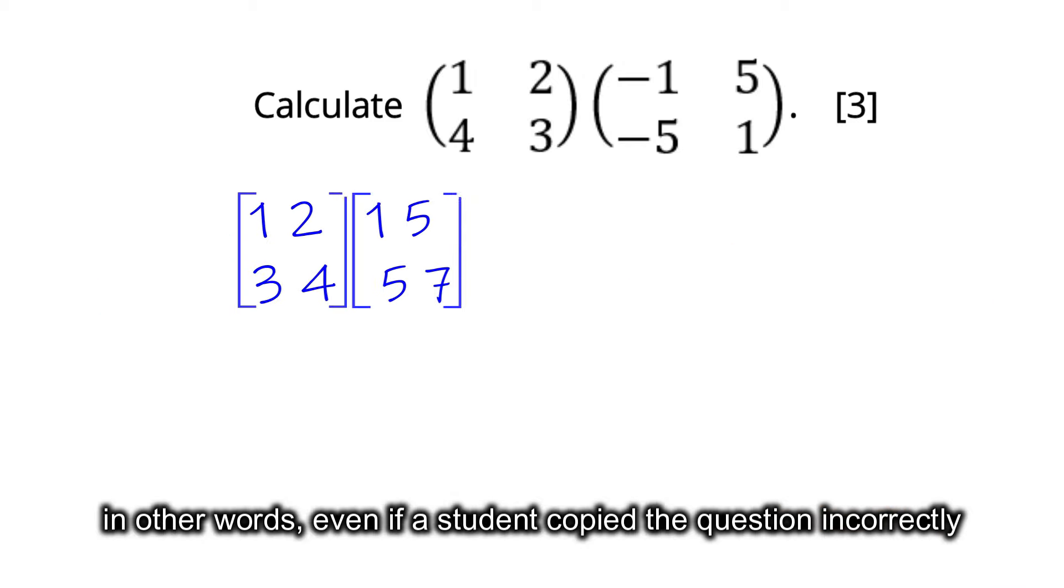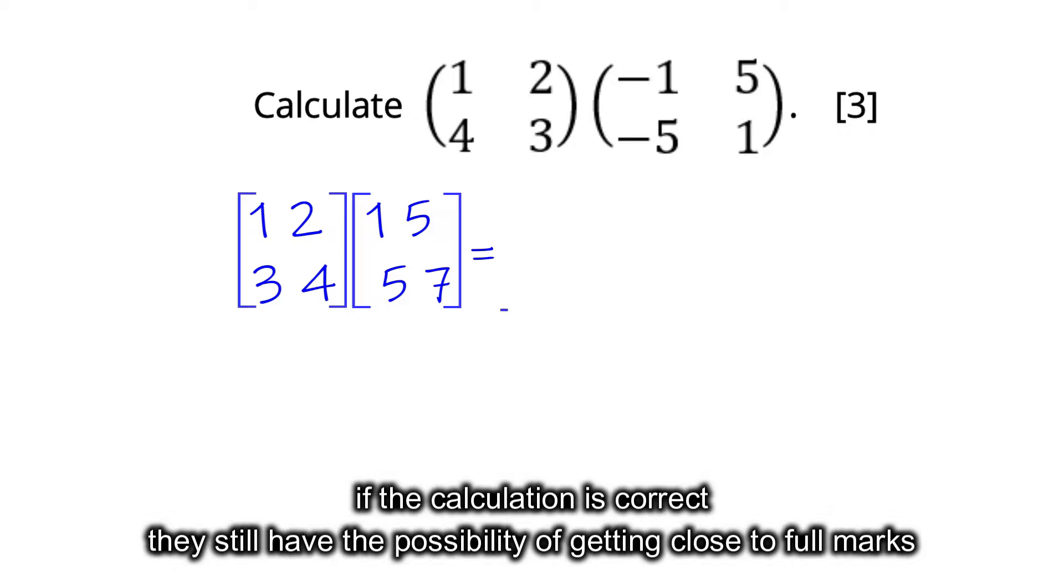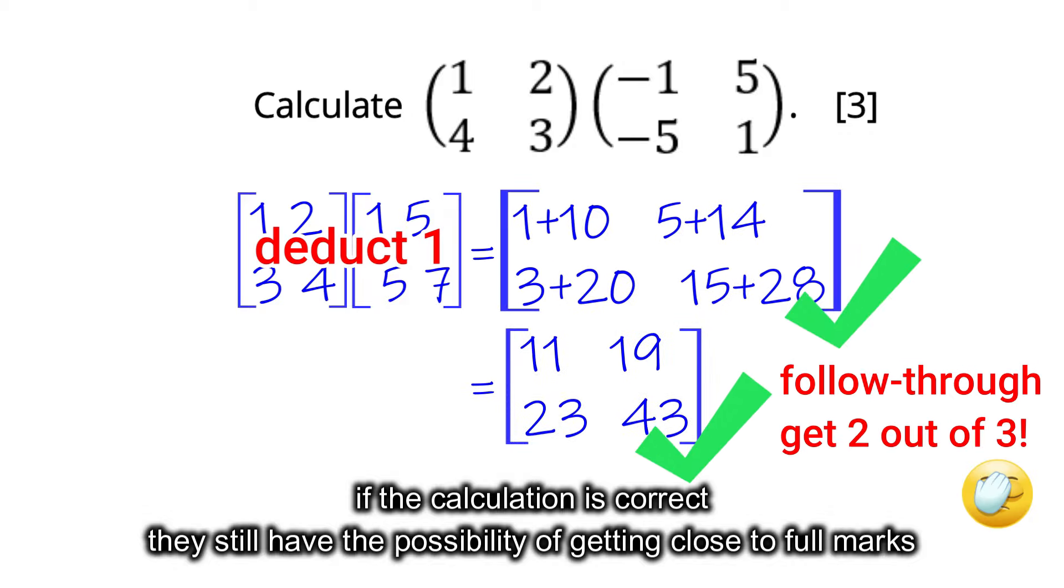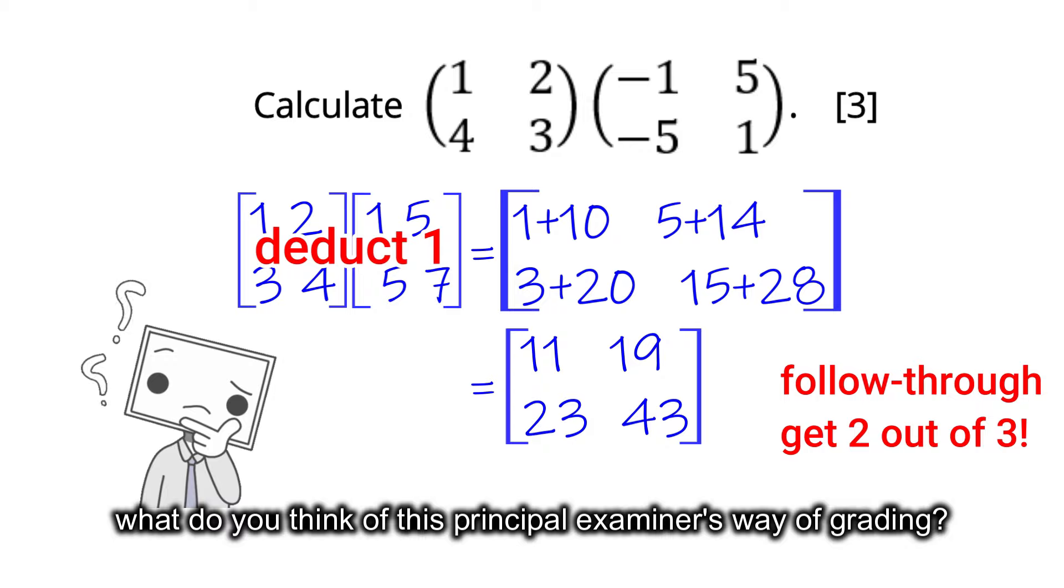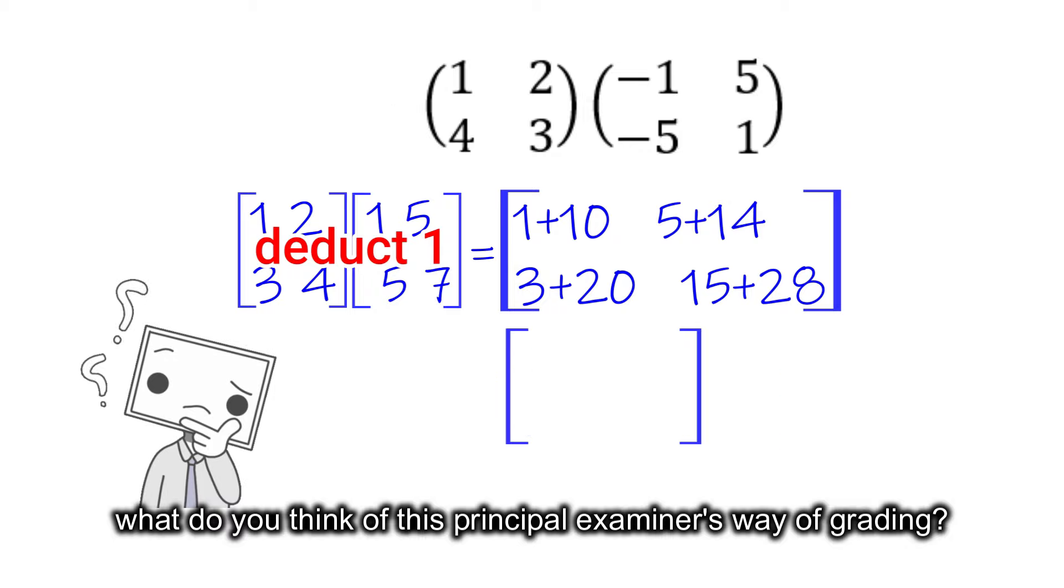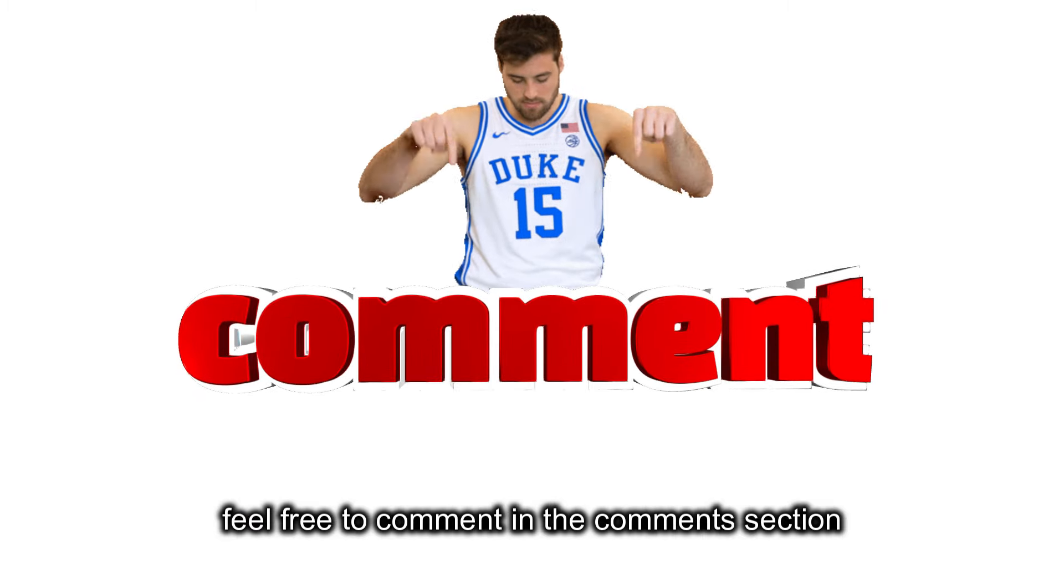In other words, even if a student copied the question incorrectly, if the calculation is correct, they still have the possibility of getting close to full marks. What do you think of this principal examiner's way of grading? Feel free to comment in the comments section.